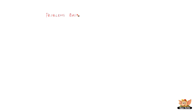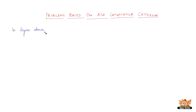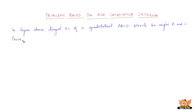Let us solve problems based on the angle-side-angle congruence criterion. The question goes like this: in the given figure, the diagonal AC of a quadrilateral ABCD bisects the angles A and C. Prove that AB equals AD and CB equals CD. A quadrilateral is a geometrical closed figure with 4 sides.